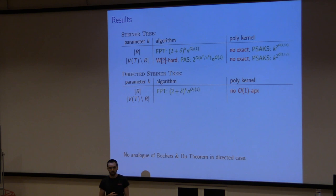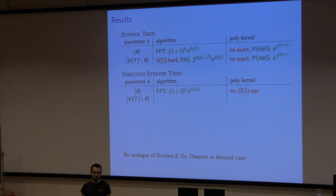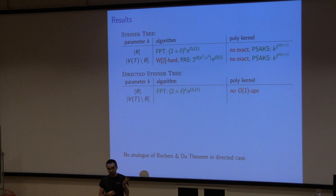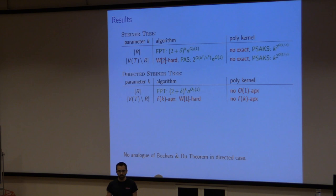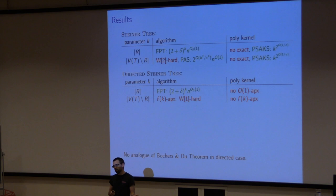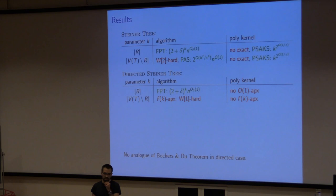For the directed Steiner tree problem, the FPT algorithm for number of terminals is the same. But as shown this morning, there is no constant-approximate polynomial kernel. For the other parameter (number of Steiner vertices in the optimum), we can show it is W1-hard to compute an f(k)-approximation for any computable function f, which also implies there is no f(k)-approximate polynomial-sized kernel. The reason is essentially that there is no Borchers-Du theorem in the directed setting. For the unweighted directed Steiner tree problem, you can be slightly faster using fast subset convolution, but again no constant-approximate polynomial kernel.